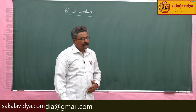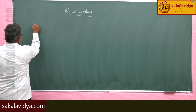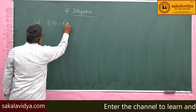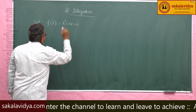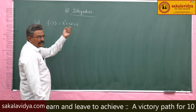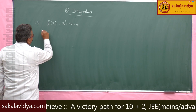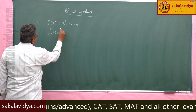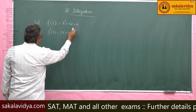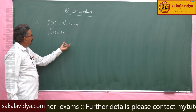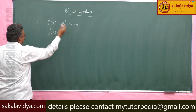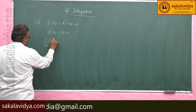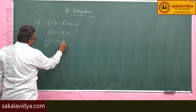Suppose for example, you take this function: let f of x equals x squared plus 5x plus 6. Now the differential coefficient of this — differentiate both sides with respect to x — we say that is f dash x. This f dash x equals 2x plus 5. Similarly, d by dx of x squared plus 5x plus 6 equals 2x plus 5.